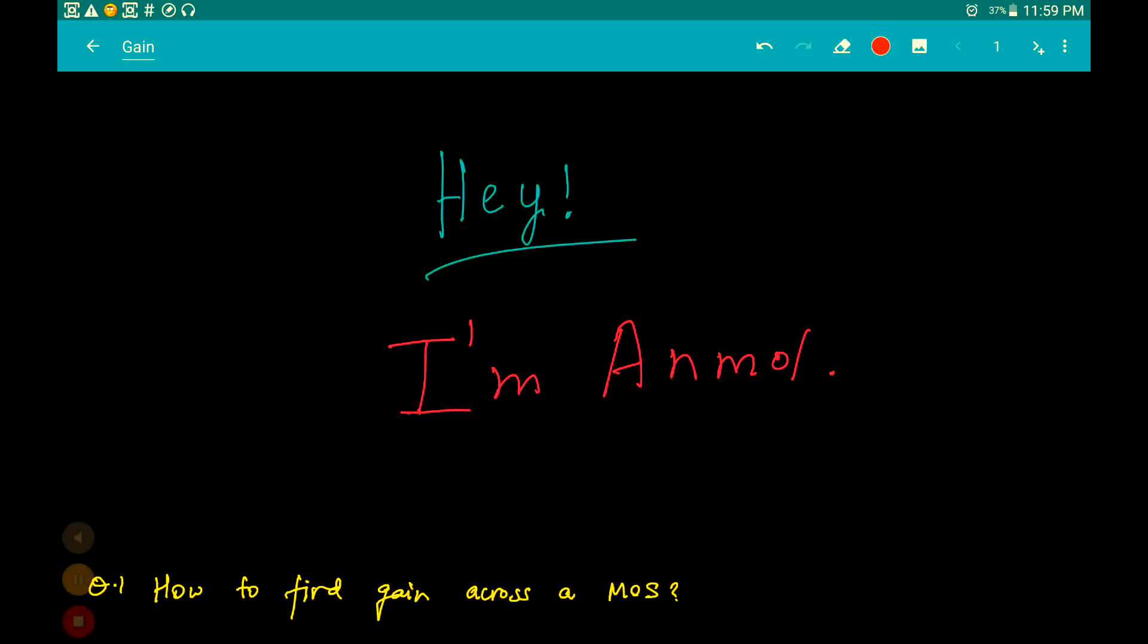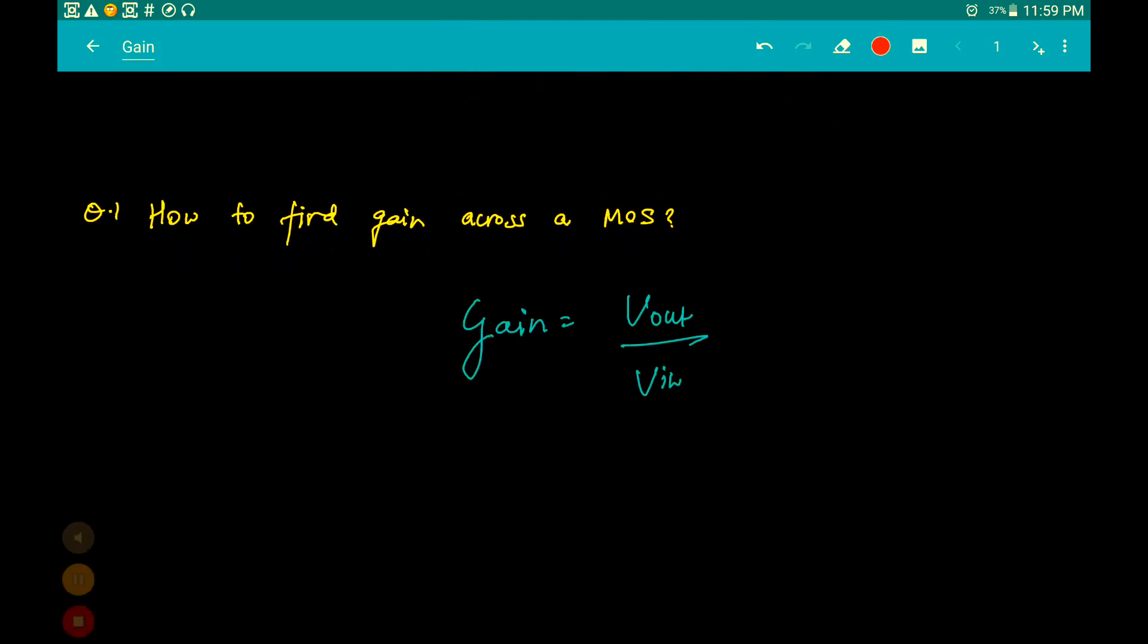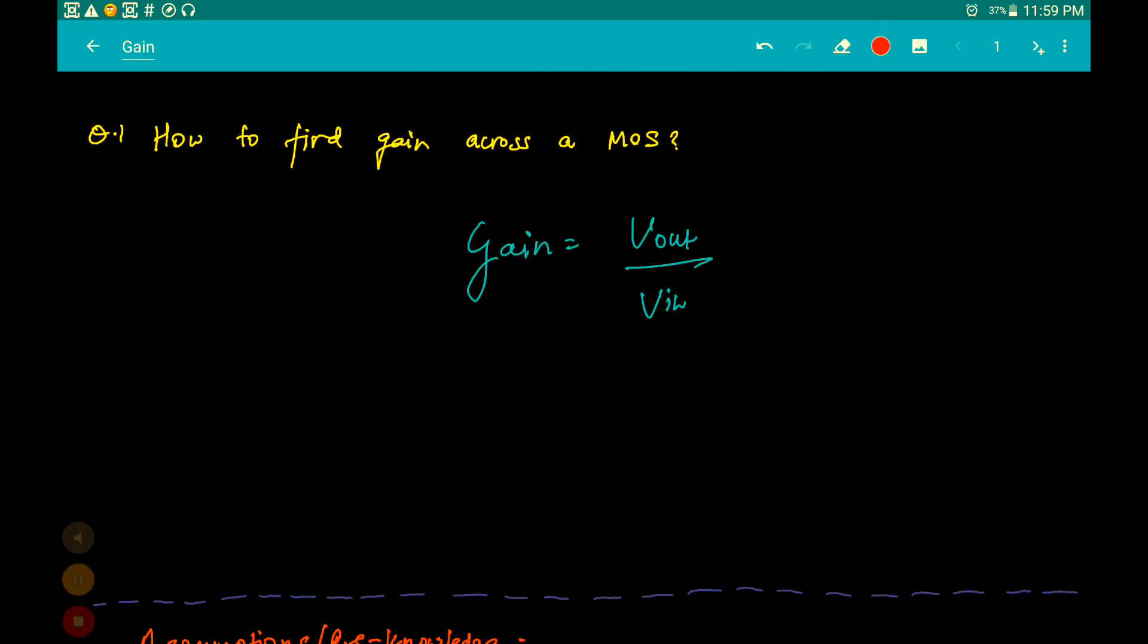Hey guys, what's up? Today we're gonna study a very basic concept of analog electronics, and our problem statement is how to find the gain across a MOS. This concept is for people who are studying electronics, any form of electronics, or probably doing a course on electronics like electronic devices, analog and digital VLSI design, etc.